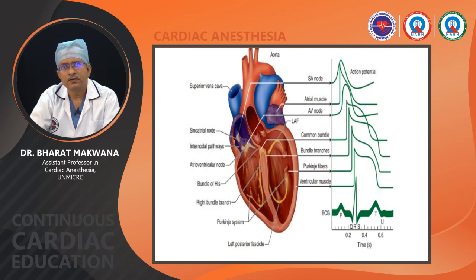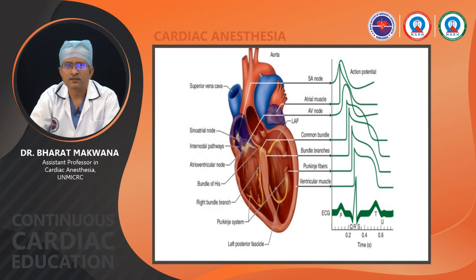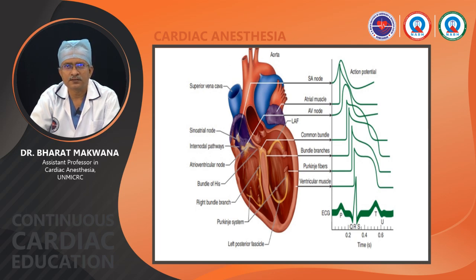Physiologically this is very important: when the action potential arising from the SA node reaches the AV node, it slows down, giving atrial contraction time to fill the left ventricle. After passing through bundle branches, it reaches the Purkinje fibers where conduction is very fast, ensuring proper filling of the LV. After that, the LV gets depolarized and systole begins.